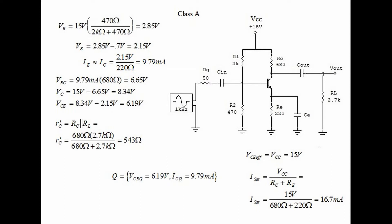We continue by saying that VRC equals 6.65 volts and VC equals 8.34 volts and VCE equals 6.19 volts. We also calculate R prime C which in this case equals 543 ohms.